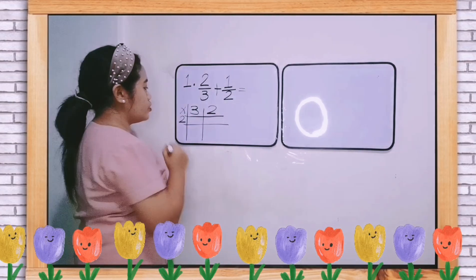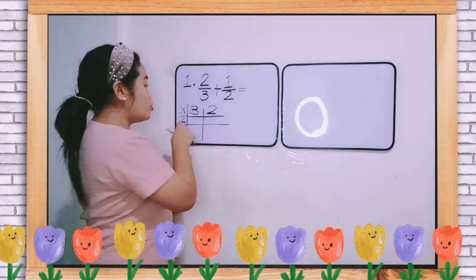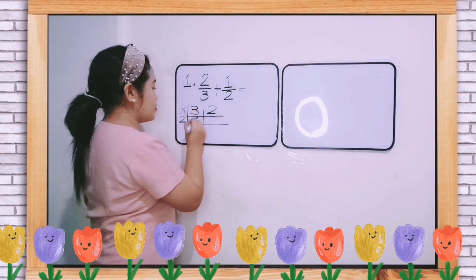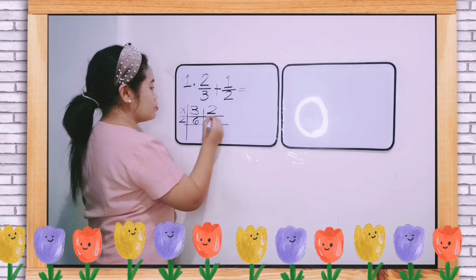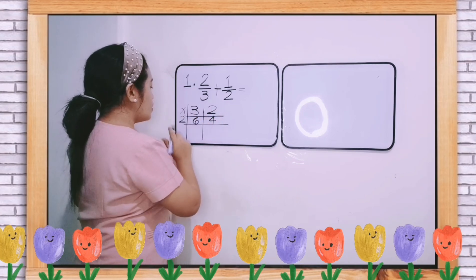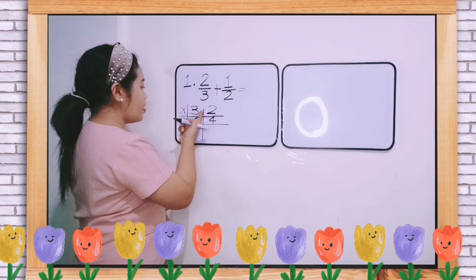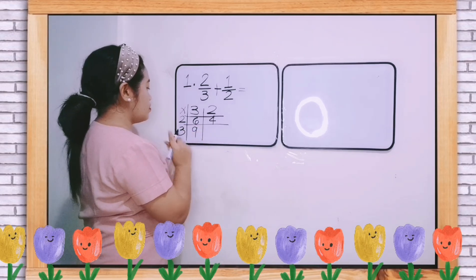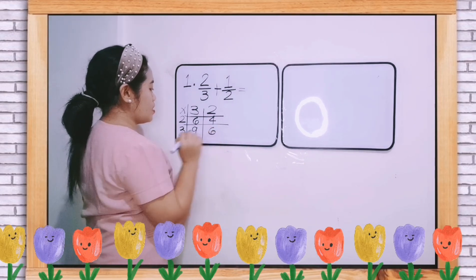We can start with 2. 2 times 3 is 6. 2 times 2 is 4. 3 times 3 is 9. 3 times 2 is 6.